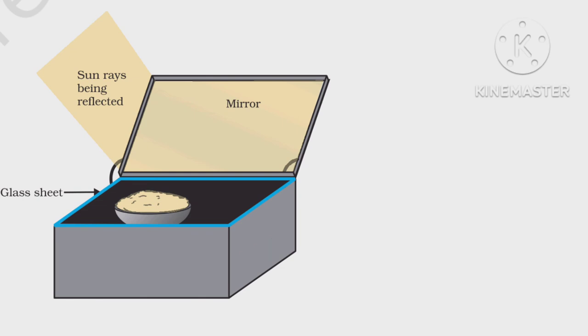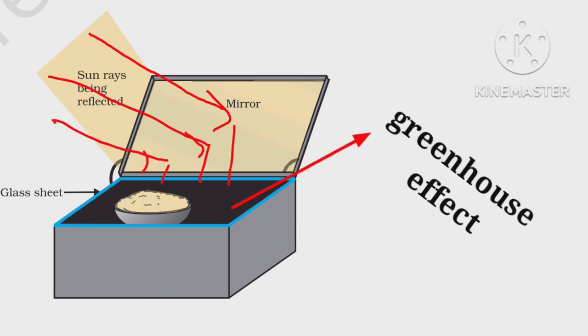A black surface absorbs more heat as compared to a white or reflecting surface under identical conditions. Some solar cookers achieve a higher temperature by using mirrors to focus the rays of the sun.